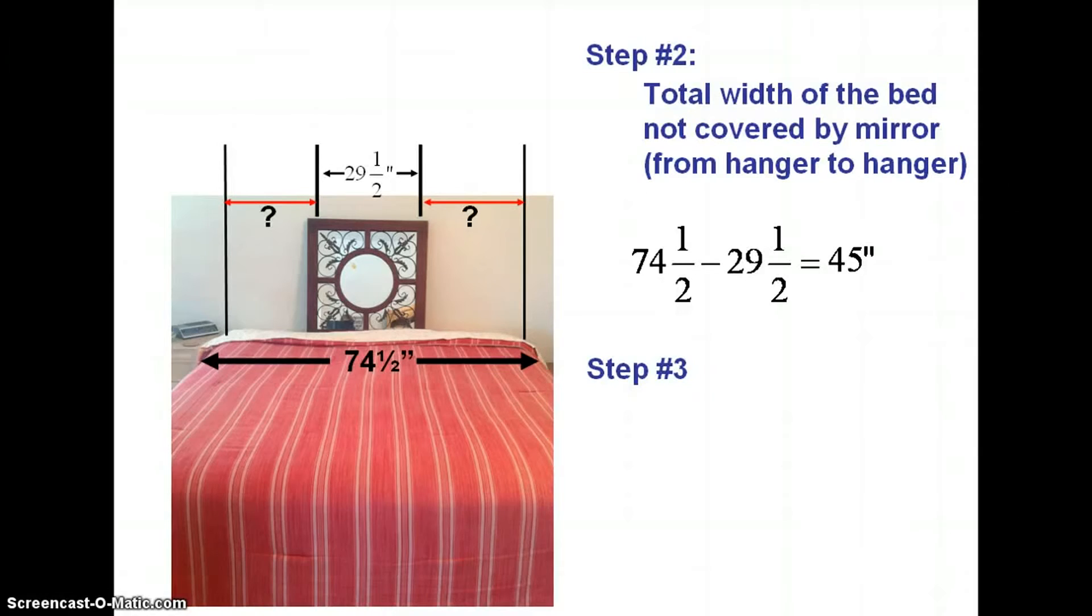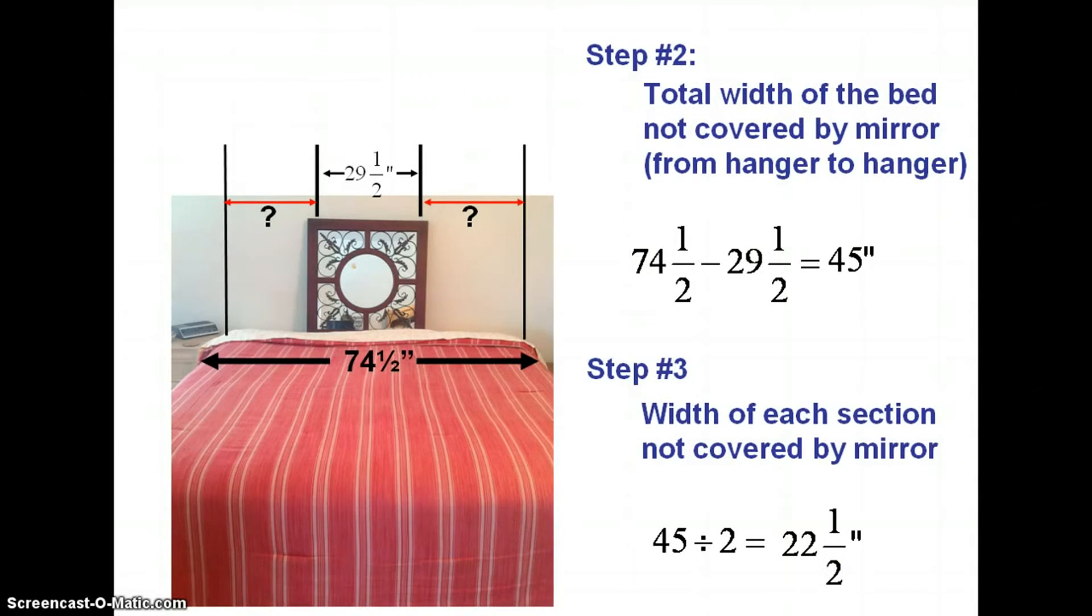So what do we do next? What's our next step? If this distance over here plus this distance over here is 45, don't I need to cut that in half to find the width of each section? Yeah, I want to know the width of each section not covered by mirror. So my next step is to take 45 and divide it in half and I get 22 1/2 inches. So what I know is if I mark the edge of the bed on the wall, I'm going to come over 22 1/2 inches and that should be where my first hanger goes. Then go from there over another 29 1/2. That should be where my second hanger hole goes. And then I need to make sure that from there over to the side is another 22 1/2. And if that works out, our measurements are good.